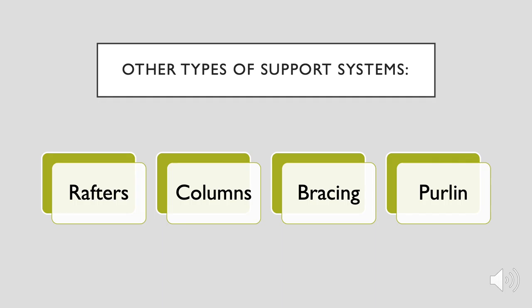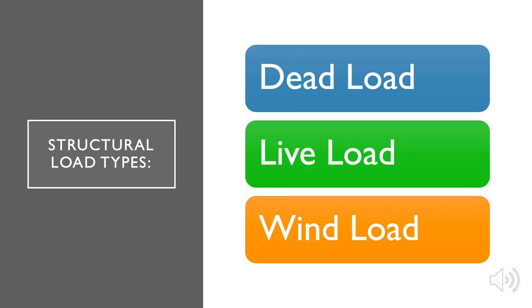A rafter is a structural component used as part of roof construction — a type of beam which holds up the main structure of a building and creates the roof's framework. A column is a vertical structural member that carries loads mainly in compression. It is considered the most crucial structural member of a building, transferring loads from a ceiling, floor slab, roof slab, or beam to the floor or foundations. A purlin is a horizontal beam along the length of a roof, resting on principals and supporting common rafters or boards.